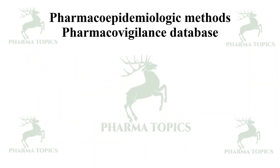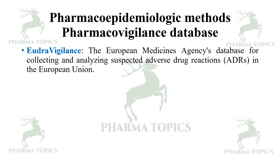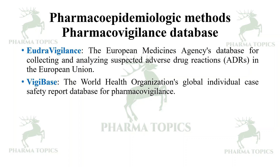Next is pharmacovigilance databases. EudraVigilance is the European Medicines Agency's database for collecting and analyzing suspected adverse drug reactions in the European Union. VigiBase is the integrated database of the World Health Organization's global individual case safety report database for pharmacovigilance.